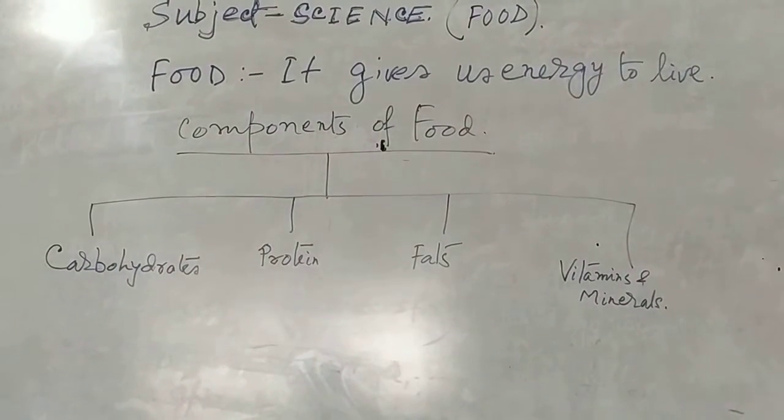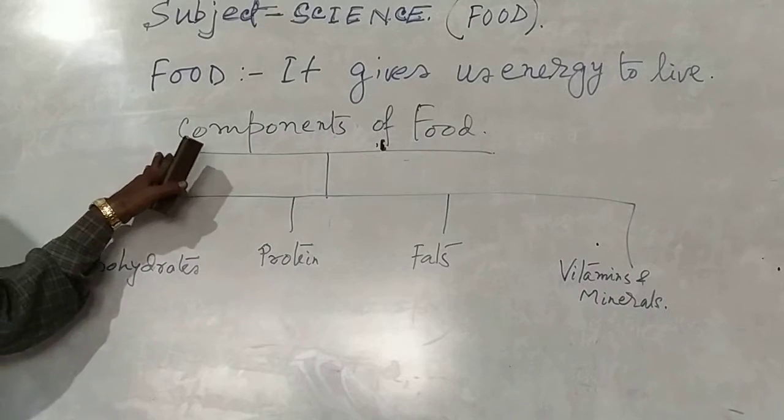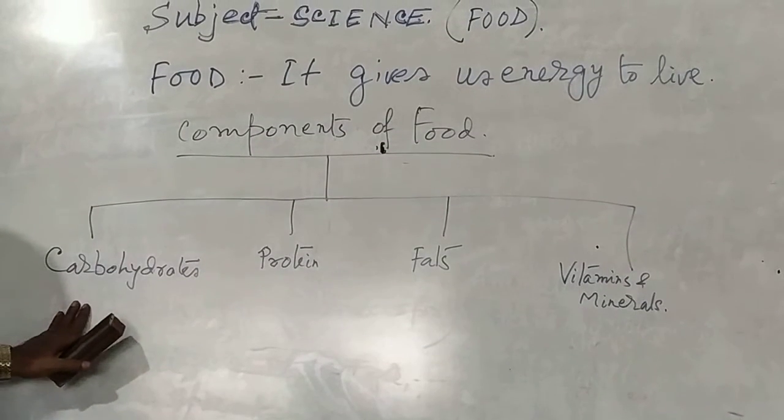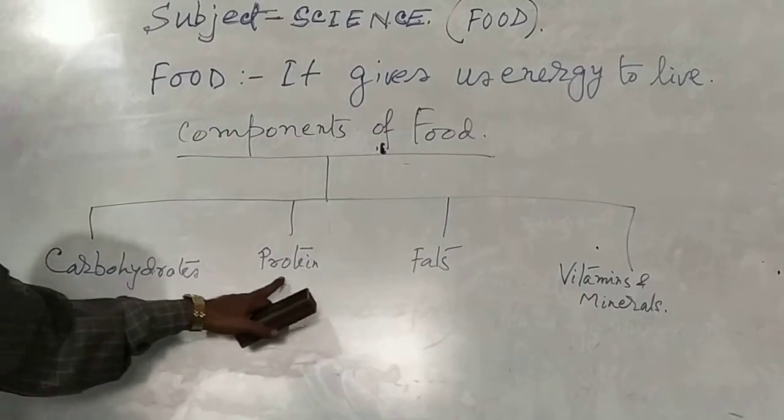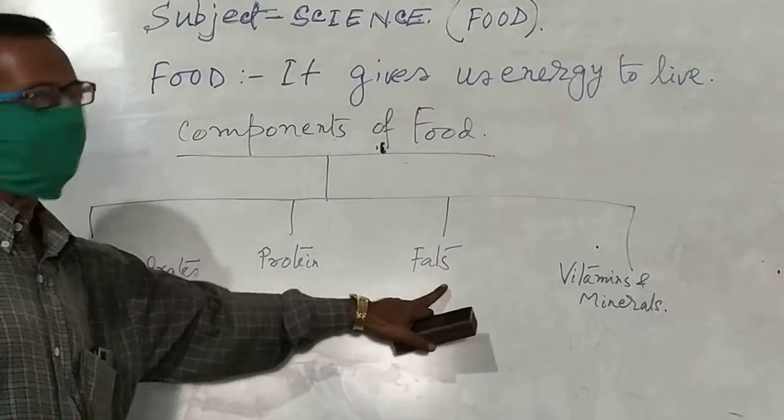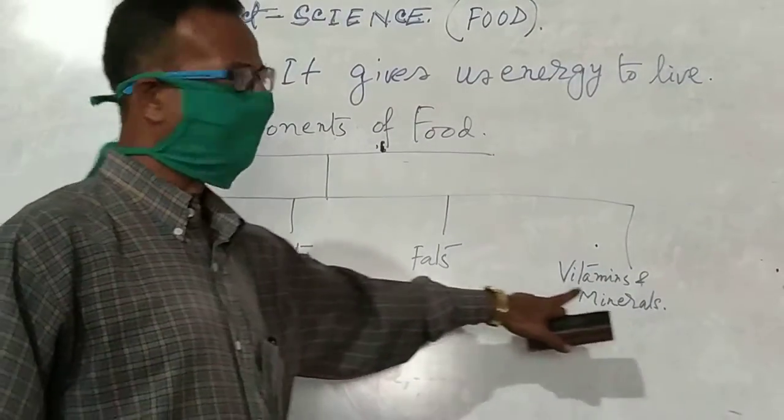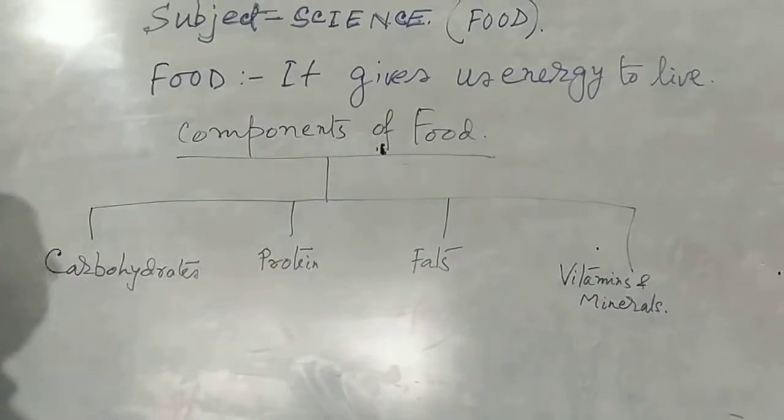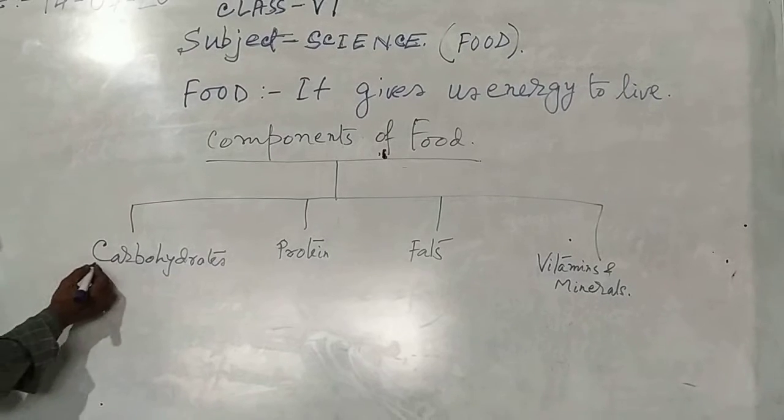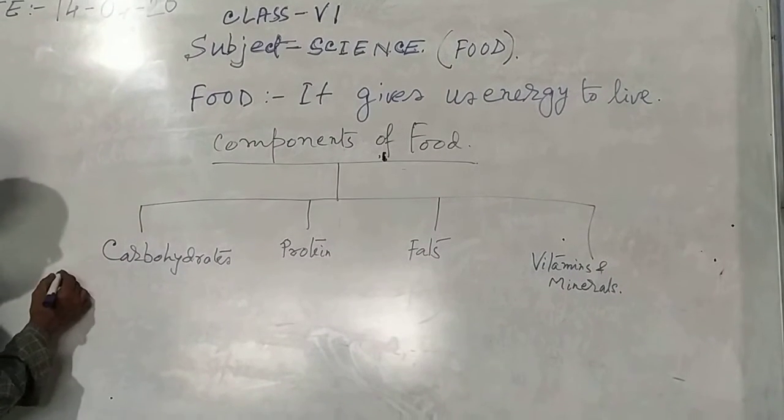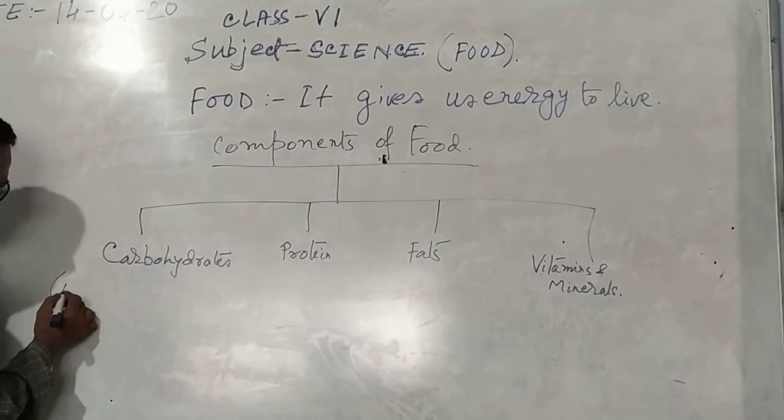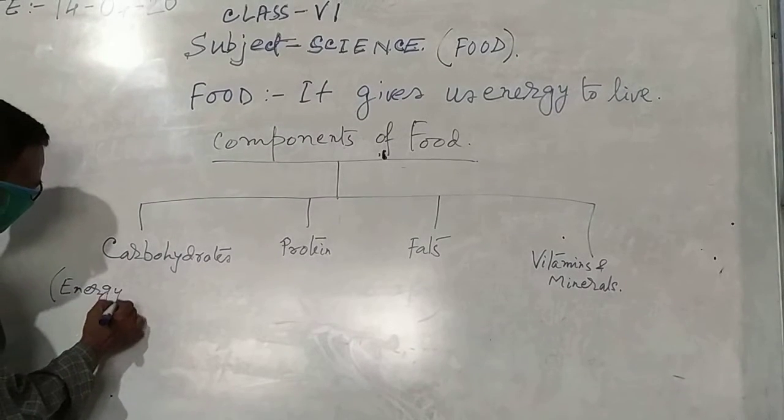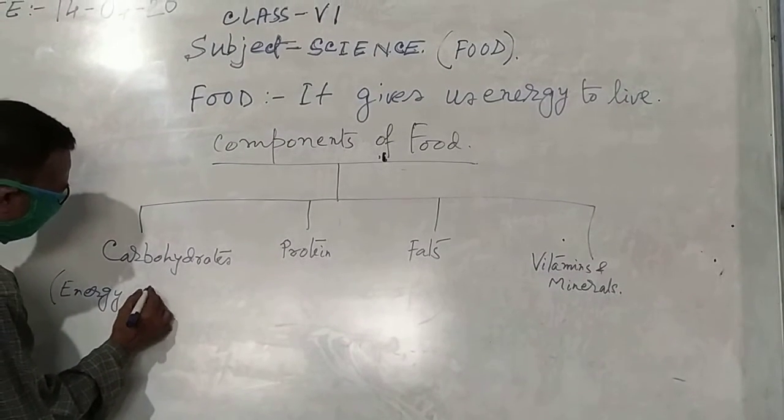The components of food are divided in four parts. First part is carbohydrates. Second part is protein. Third part is fats. And fourth part is vitamins and minerals.